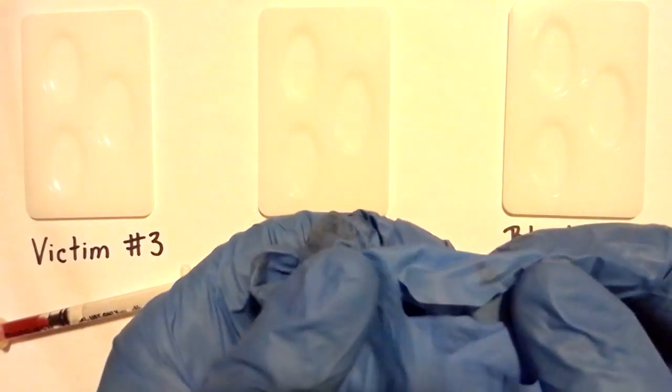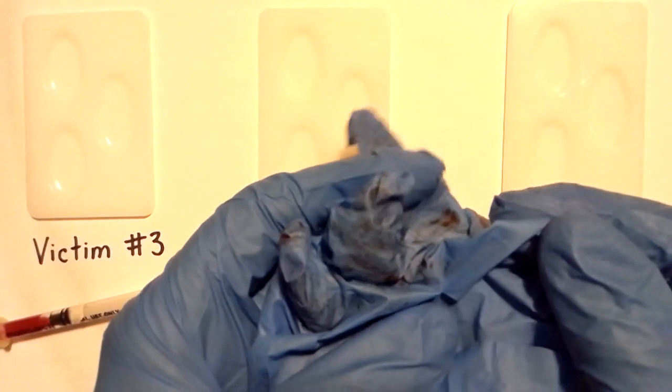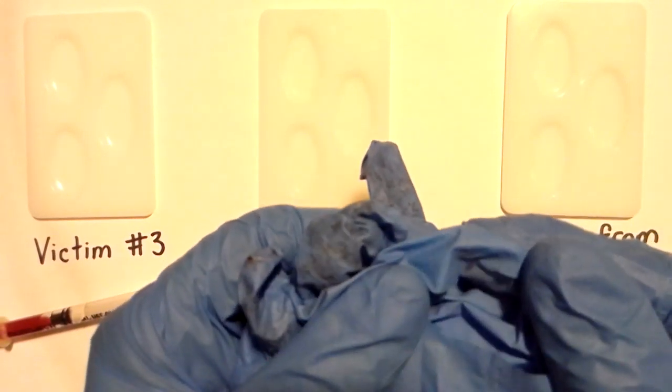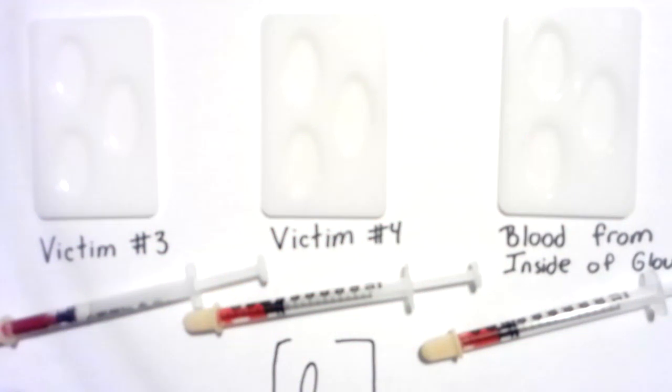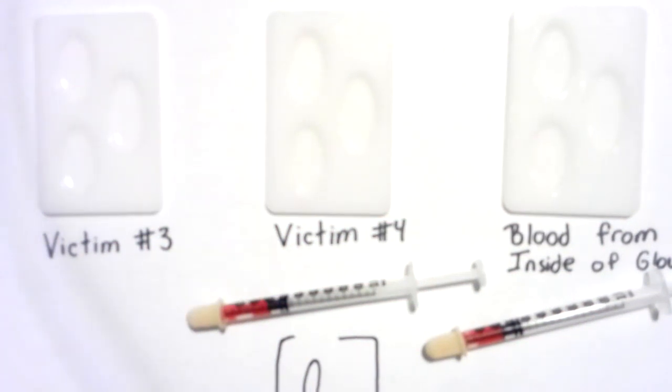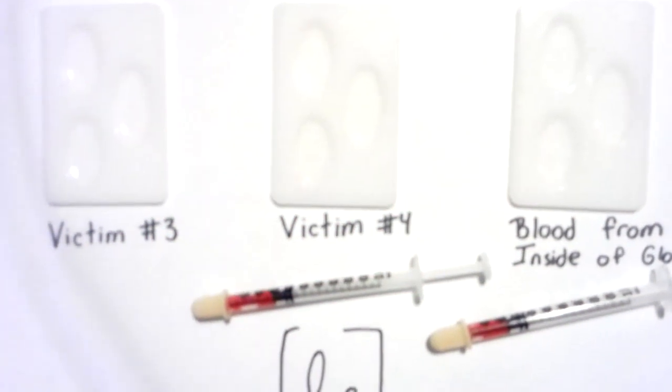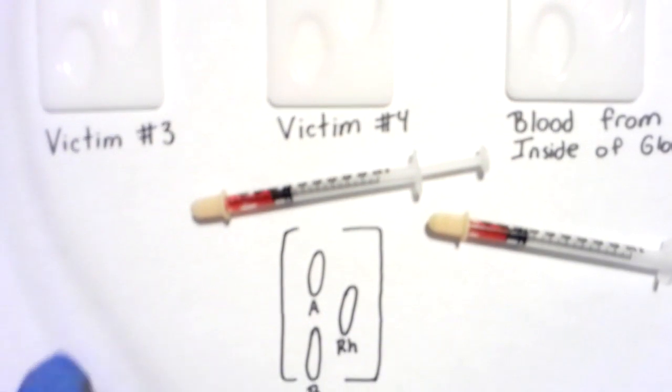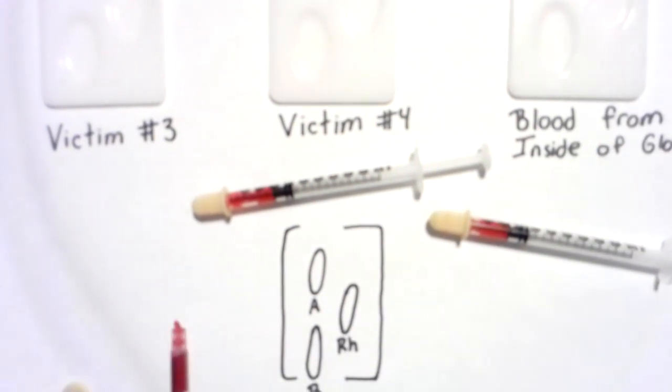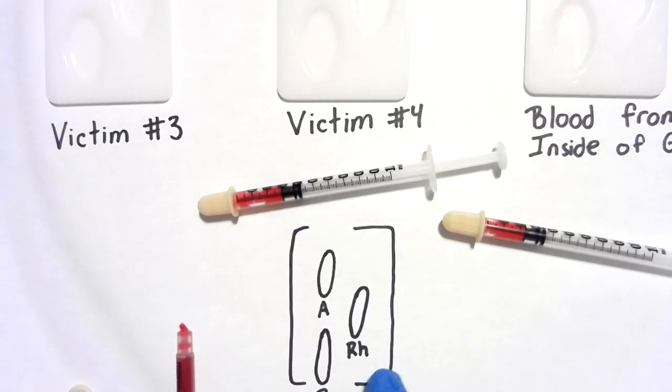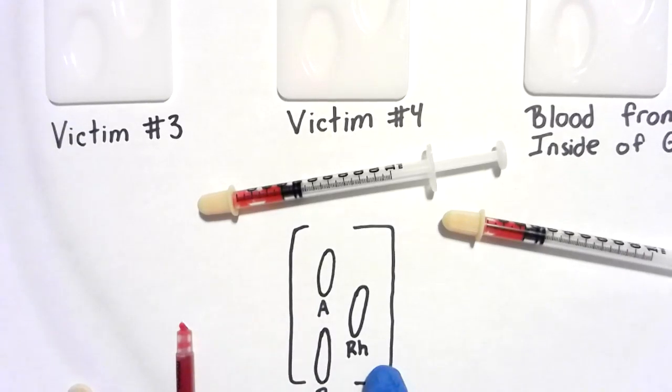There had been a cut, a hole even, in the glove and there was blood that we were able to extract from the inside of that glove. Keep in mind we will be testing for the A, the B, and the Rh, so the A and B antigens and the Rh factor.